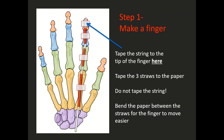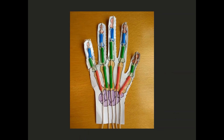Now, once you're done taping the pieces of straw down to the bones, you're going to bend the paper in between the straws. And this will make the finger easier to move. And when you've completed this, this is what your finished hand will look like. The bones don't have to be color coordinated, so you can use whatever color straws you wish. And you can do one finger or you can do all five fingers.